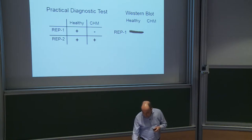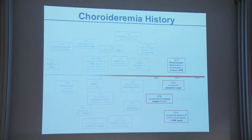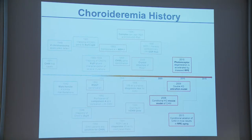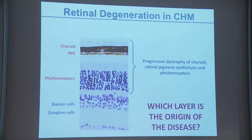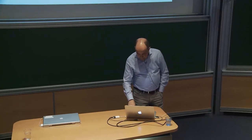To provide a possible treatment, we needed to mimic this mutation in a minimal model. The mouse is a very commonly used and useful model. The main question for therapy was: which layer is the origin of the disease? This is critical because you want to know which cells to target. There's no point targeting photoreceptors if the disease originates in the choroid, and no point treating the RPE if the disease is all in the photoreceptors.